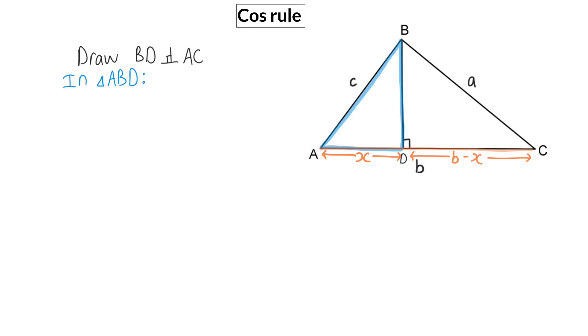Next, I'm going to work in triangle ABD and use the theorem of Pythagoras. I'm going to use this theorem to determine side BD, which is the common side for the two triangles. So, the theorem of Pythagoras says that BD squared will be equal to C squared minus X squared. Then I'm going to repeat this in triangle BDC, where BD squared will then be equal to A squared minus side B minus X squared.